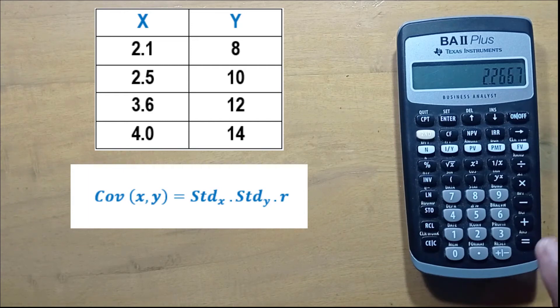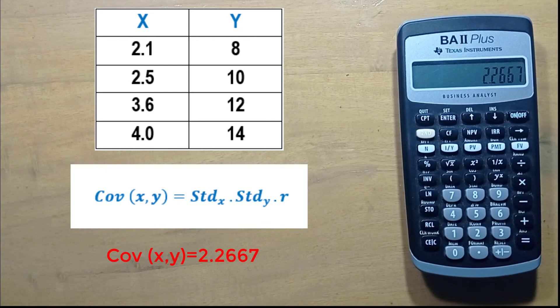This is our covariance which is 2.2668. We can verify this by manually calculating with the standard deviation of x, standard deviation of y, and correlation coefficient r.